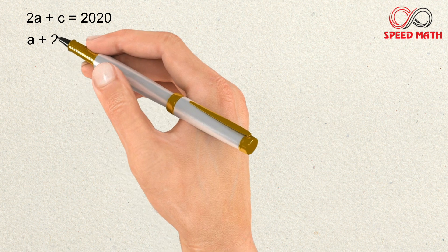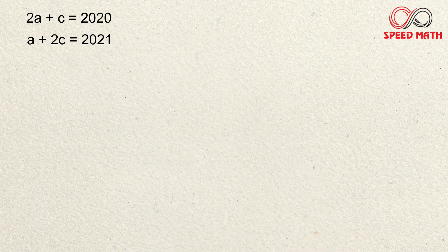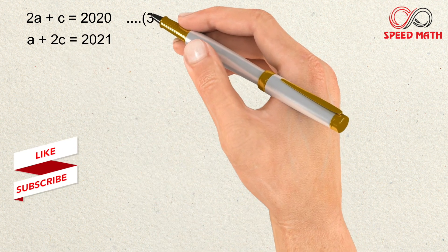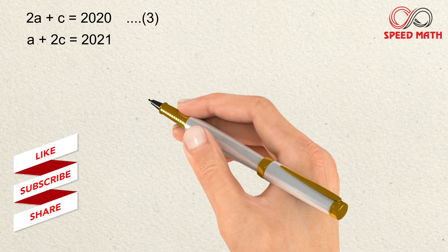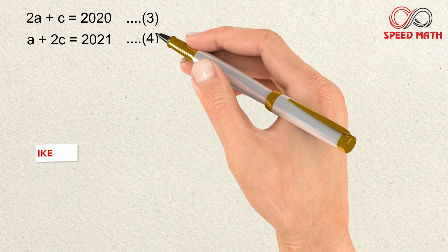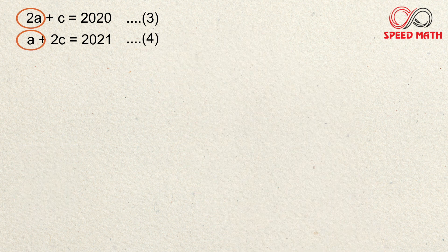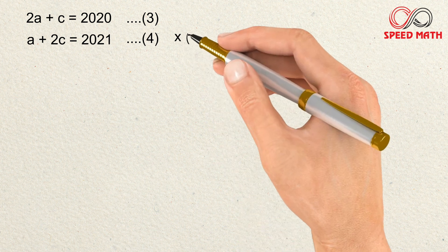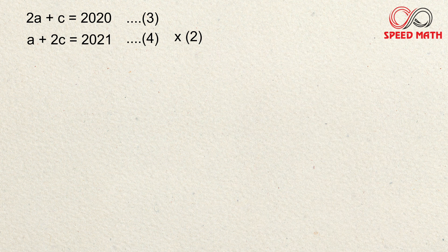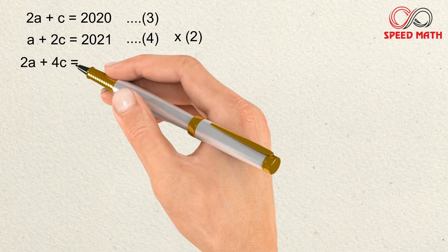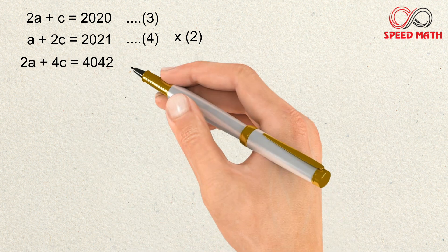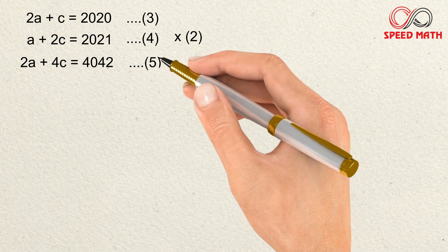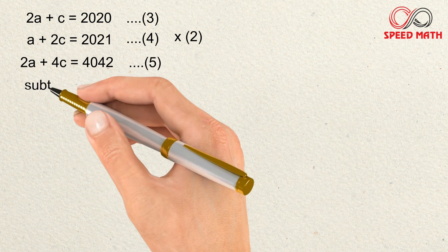We call 2a + c = 2020 as equation 3 and a + 2c = 2021 as equation 4. To eliminate a, we need the coefficients of a to match, so we multiply equation 4 throughout by 2, giving 2a + 4c = 4042. We call this equation 5.